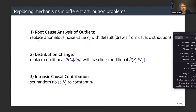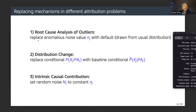This framework has been applied to RCA of outliers, where we replace the extreme noise value εj with a default value — the natural observed distribution of the noise variable. In distribution change, we replace the conditional with some baseline conditional. In intrinsic causal contribution, we set the random noise to some constant.